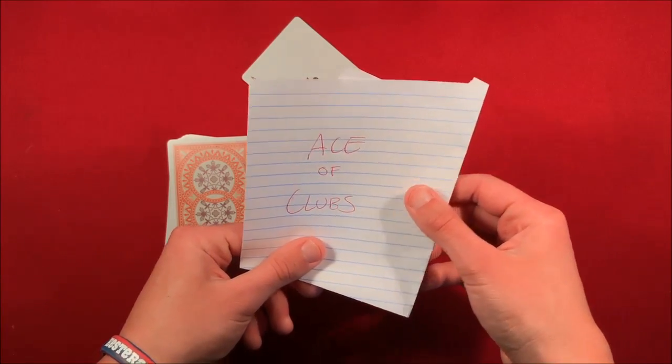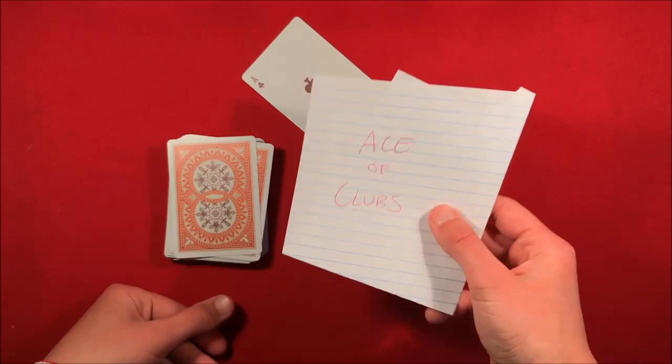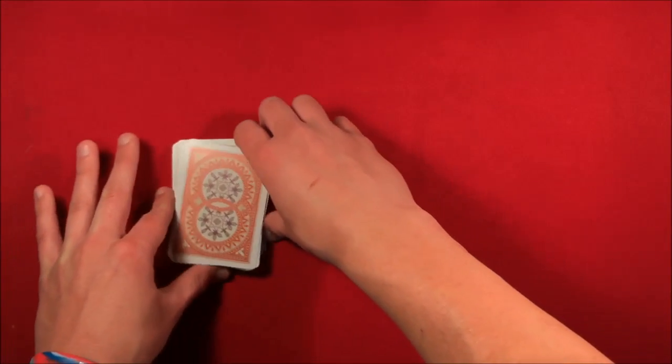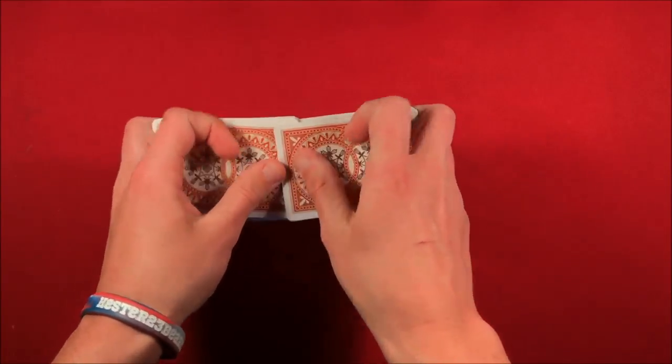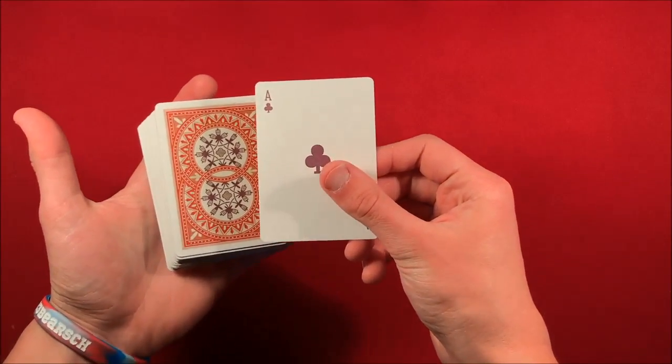Let's say we want to force the ace of clubs because we have this in a prediction. So you write this down, put this in your pocket, and you have the forced card on top of the deck. You can shuffle up the deck, just making sure that you leave it there on top. Whatever you have to do, just make sure this card stays on top.